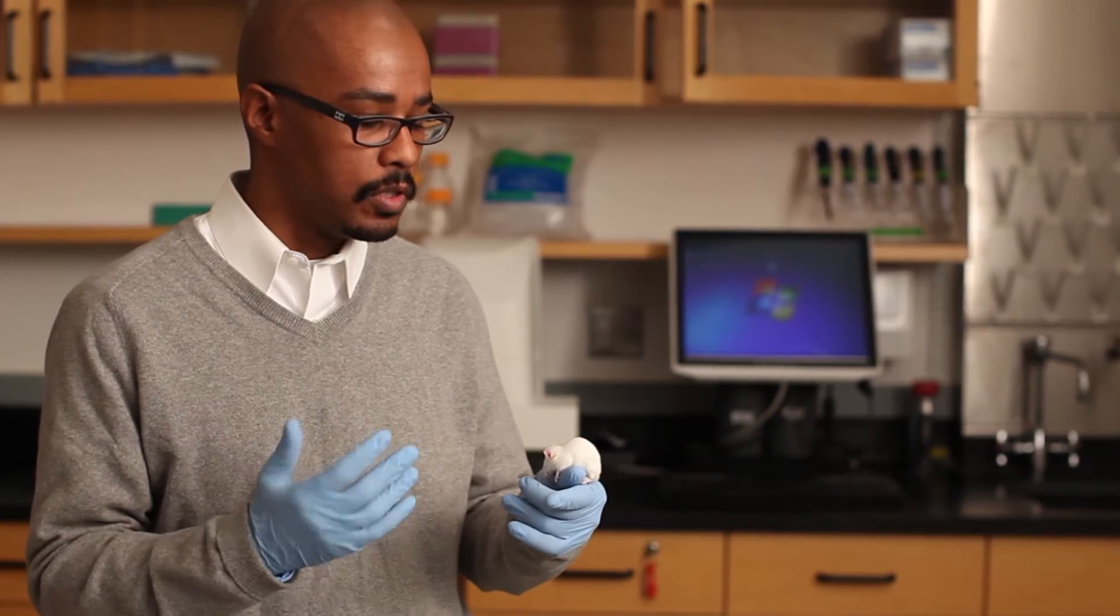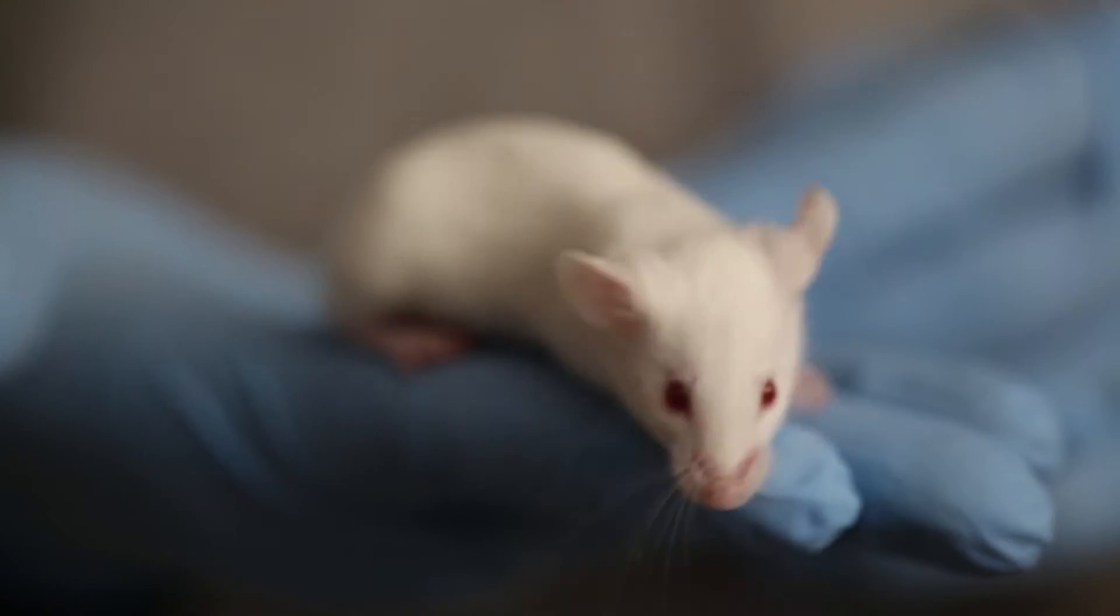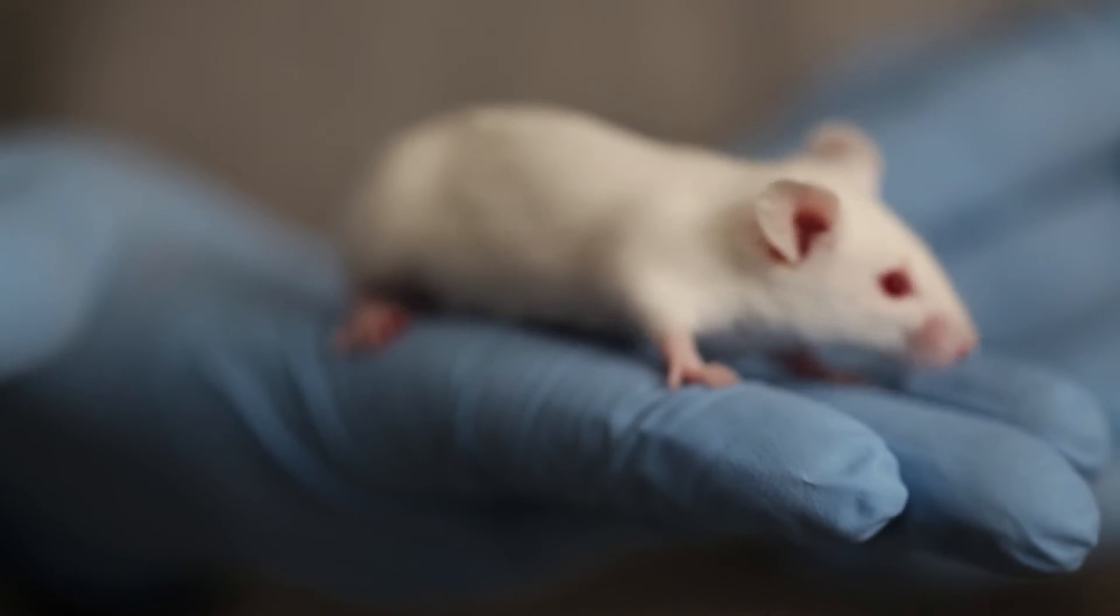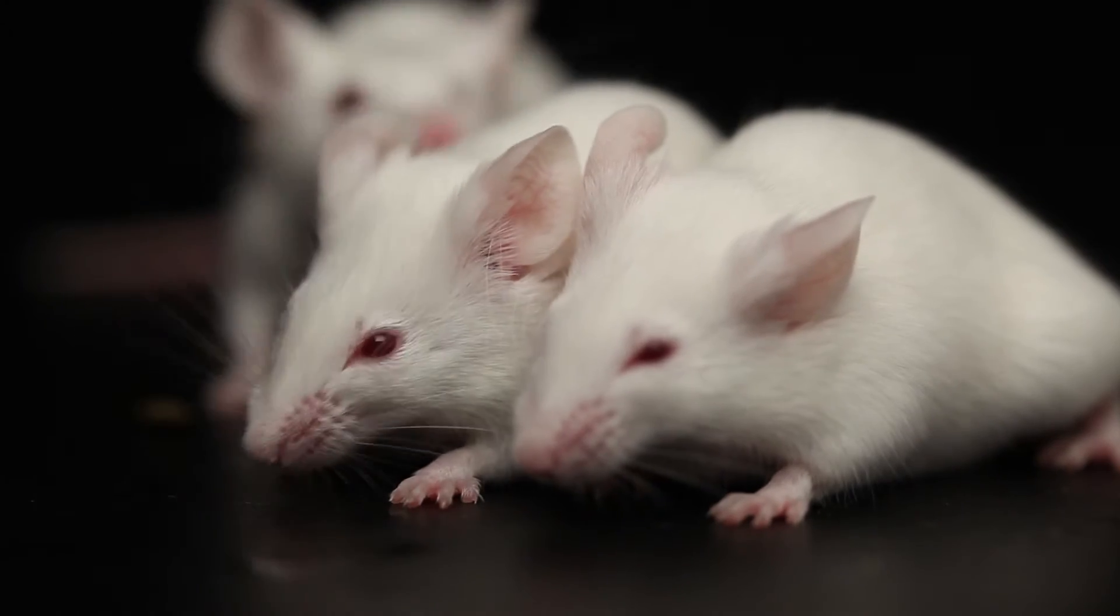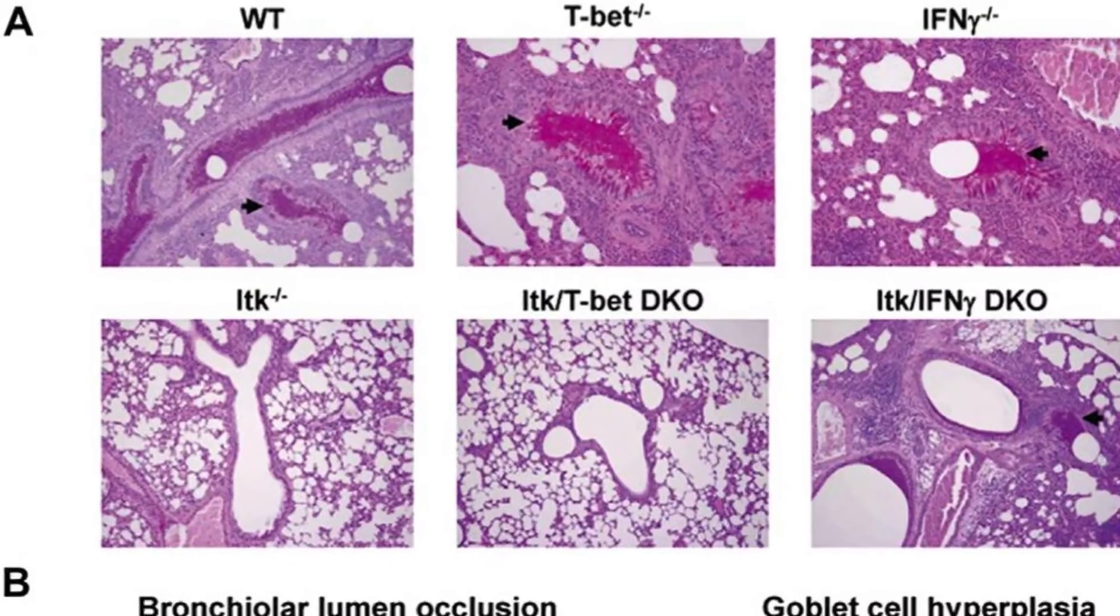And so that leads us to developing animal models such as the mouse that I'm holding here. We can genetically manipulate it to remove or add back certain components of the immune system and then ask the question, do we still get the disease?